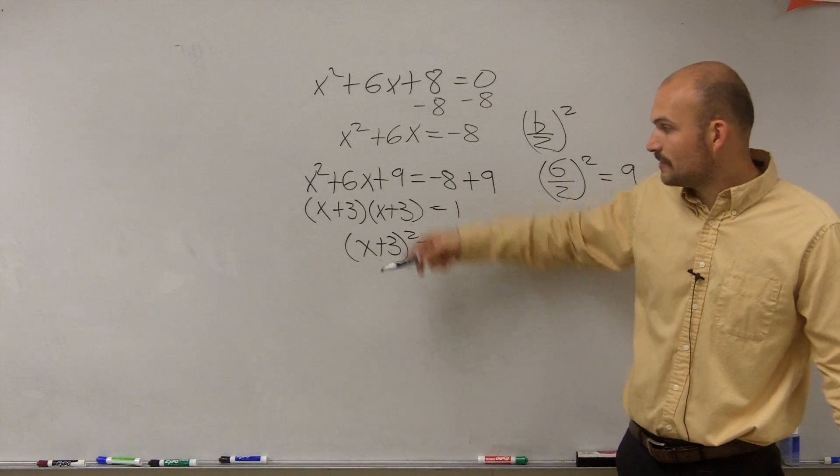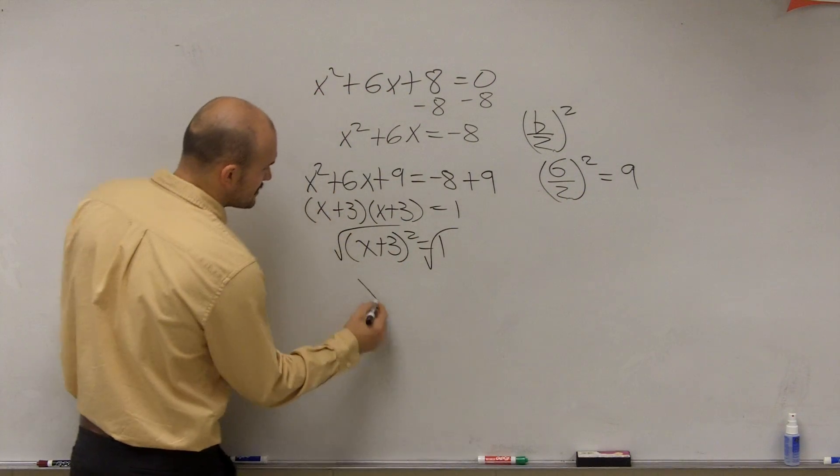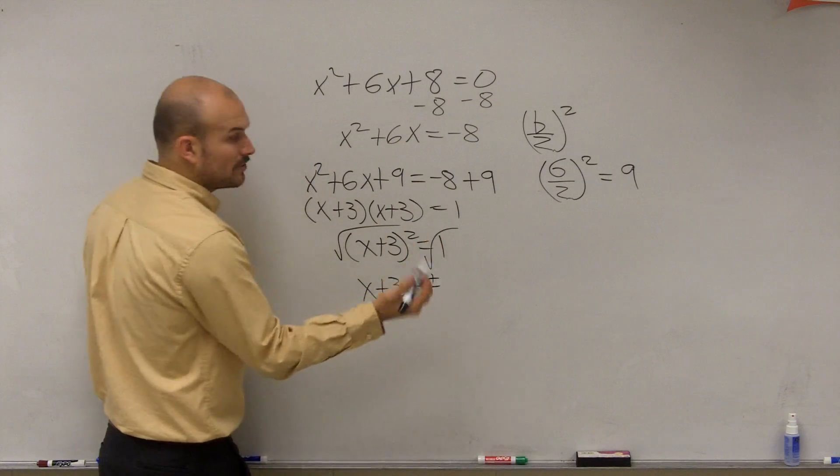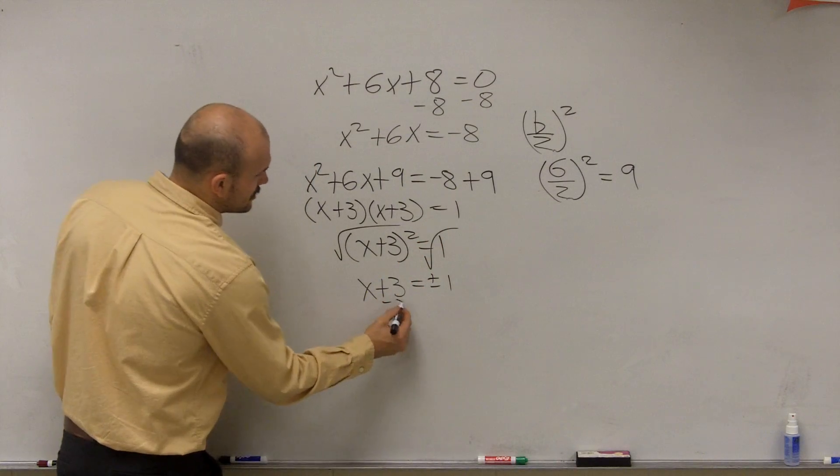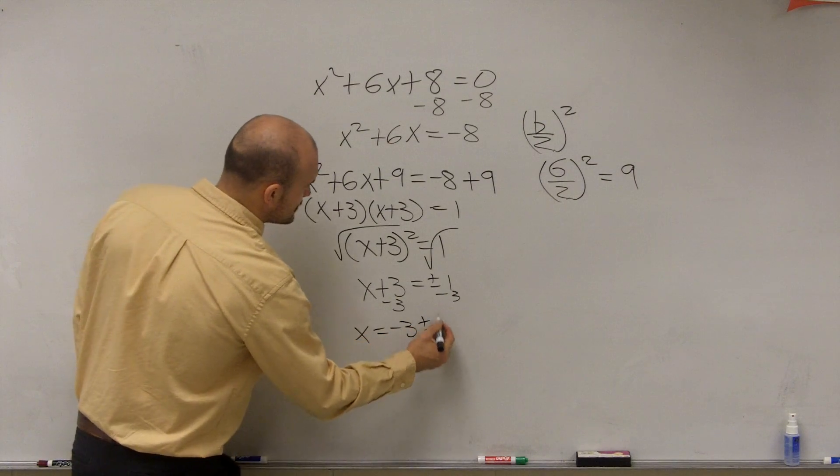Now all I need to do to solve for this is I just use my inverse operations, which is to take the square root on both sides. So I have x plus 3 equals plus or minus the square root of 1, which is 1. Subtract 3 on both sides. x equals negative 3 plus or minus 1.